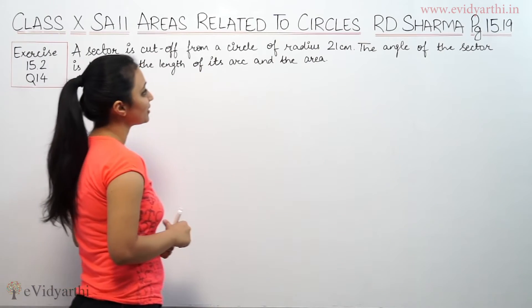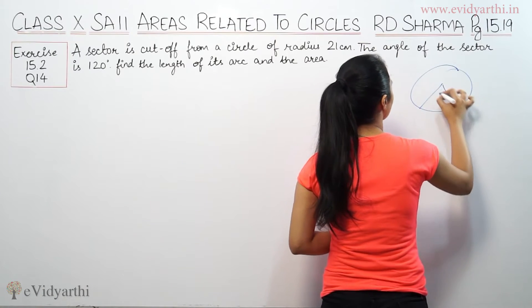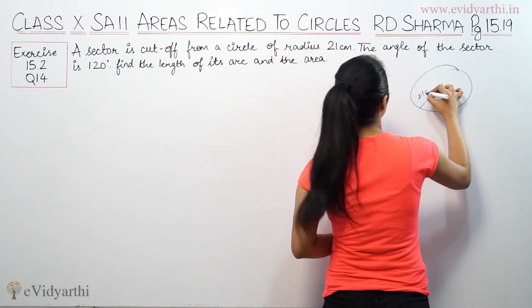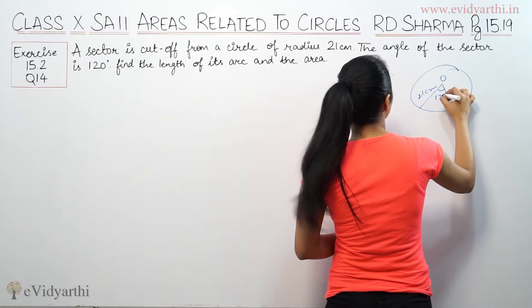A sector is cut off from a circle of radius 21 cm. This is a circle, this is my sector whose radius is 21 cm. The angle of the sector is 120 degrees.